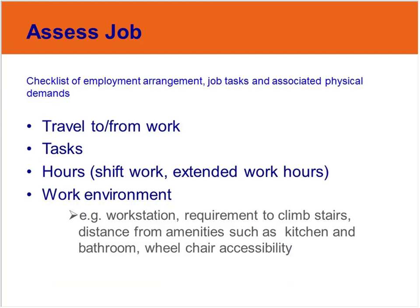Having assessed the patient in regards to the acute injury and the physical tolerances arising from the effects of the injury, the next phase is to assess the job and workplace. Typically this can be done in a number of ways. Often the employer will have been able to provide a task analysis document which provides information about the nature of the duties, the environments duties are performed in, and the physical demands. If that's not available, information can also be obtained by discussing with the patient and potentially the rehabilitation coordinator.